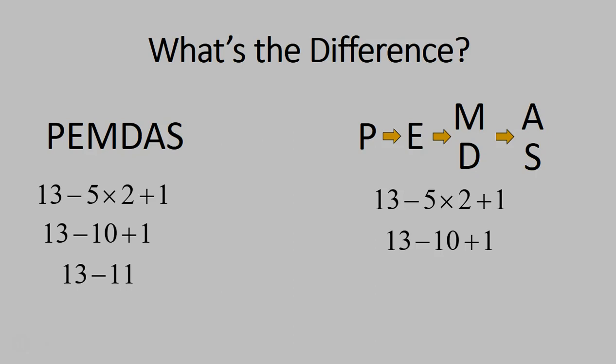In the other way, on the right, we would look at addition and subtraction and start at the left, moving to the right, doing them in one step, basically. Addition, subtraction, that's all that's left. Great. Start at the left, move to the right. 13 minus 10 is 3.